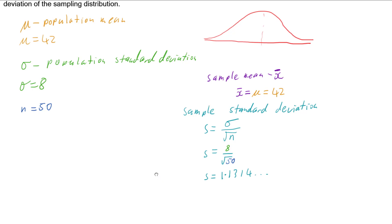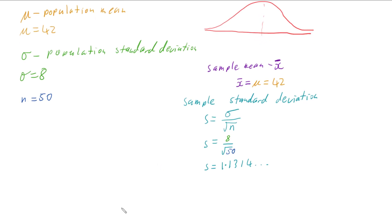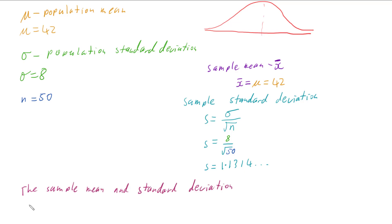So now we can write our answer. The sample mean and standard deviation are expected to be about 42 and 1.13, and that's it.